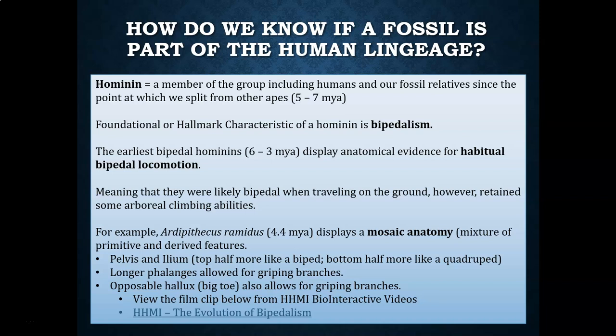Let's start by defining what it means to be a hominin. A hominin is a member of the group that includes humans and our fossil relatives since the point at which we split from the other apes. Based on genetic evidence, which we also call molecular evidence, as well as fossil evidence, it is believed that this split happened somewhere between 5 to 7 million years ago.